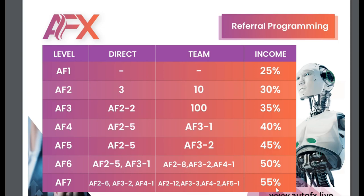Here's how rank differential works: if you're on rank seven and someone in your team who's on rank four refers somebody, that person gets 40% of the activation fee ($32). You as rank seven get the balance — 15% — which is about $12. If a person in your team is on rank two, you get the balance of 25%. If they're on rank three, you get the balance of 20%. That's how it works, and it's sweet money.